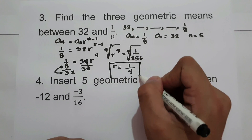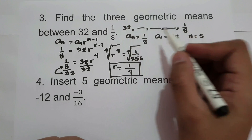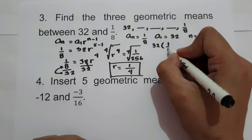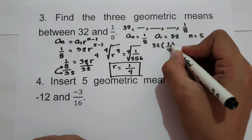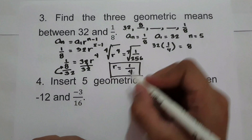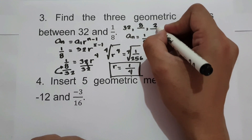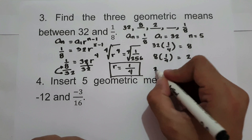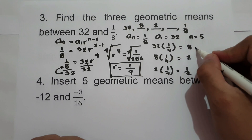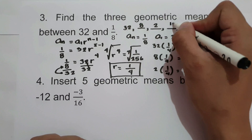To find the three geometric means between 32 and 1/8, we multiply by the common ratio 1/4 successively. 32 times 1/4 equals 8; 8 times 1/4 equals 2; 2 times 1/4 equals 1/2. So the three geometric means between 32 and 1/8 are 8, 2, and 1/2.